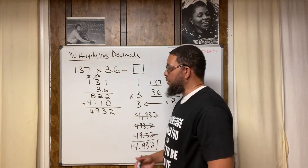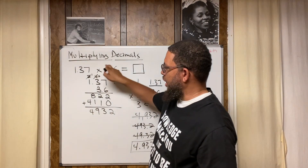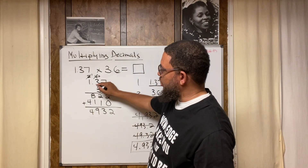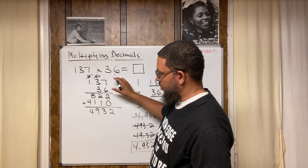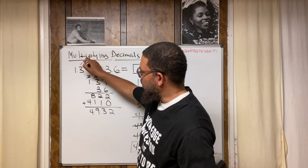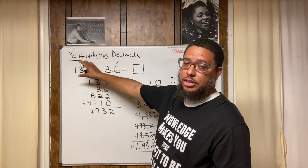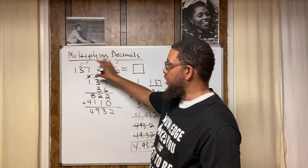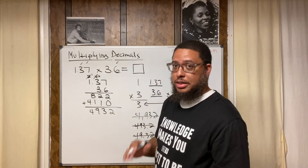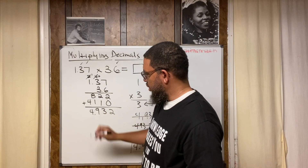Now, here's the actual step: to know where to place the decimal point, go back to the original factors and count how many digits are to the right of the decimal point in each number. In 1.37, there are 2 digits to the right of the decimal. In 3.6, there is 1. Altogether that's 3 digits. So in the product, there should be 3 digits to the right of the decimal point — giving us 4.932. That's the step.